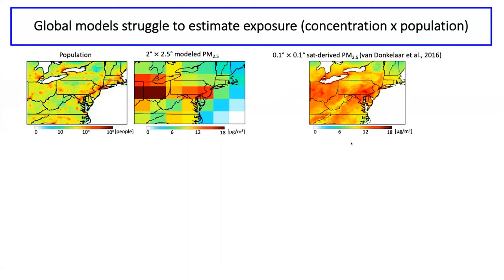This leads to estimates like those shown from a much more recent paper by the same group, where surface PM2.5 has been estimated at the 0.1° scale. Going back to the earlier figure, PM2.5 estimates at that scale are a much better match in terms of spatial gradients with the gradients in population, making them far more useful for estimating exposure.